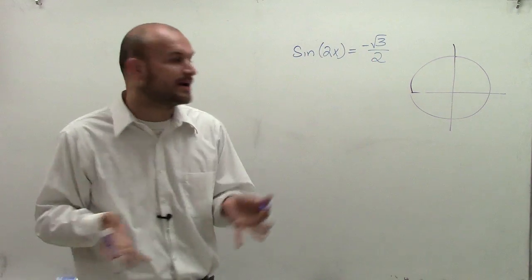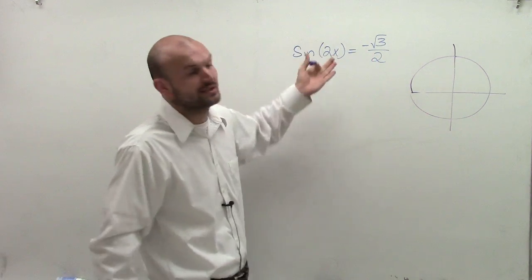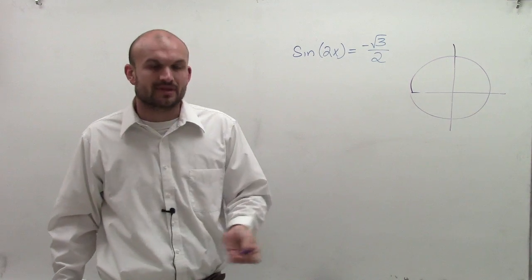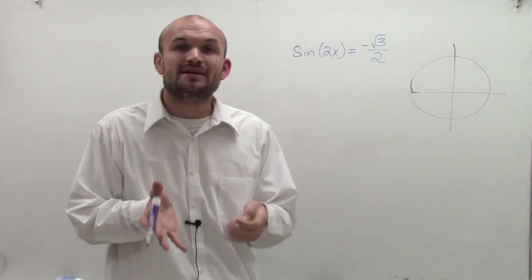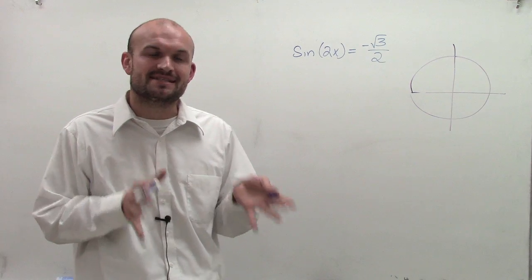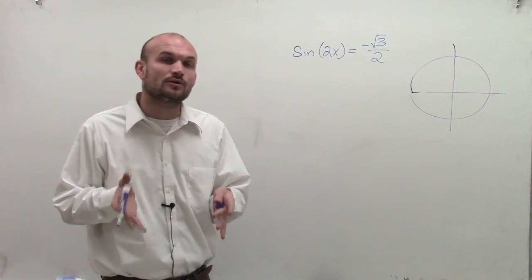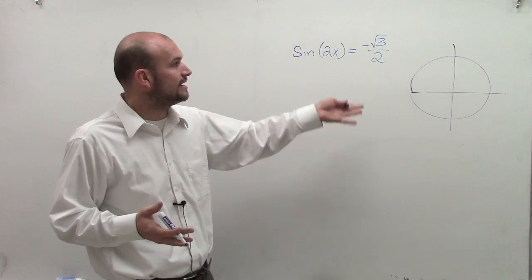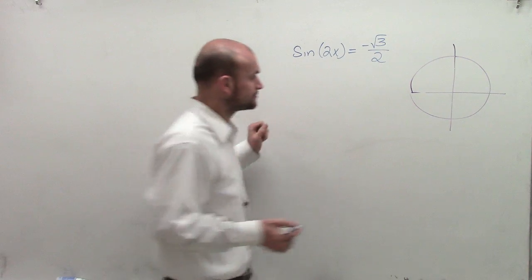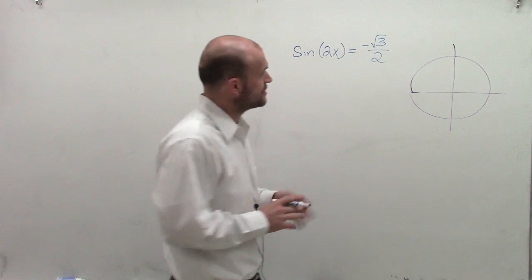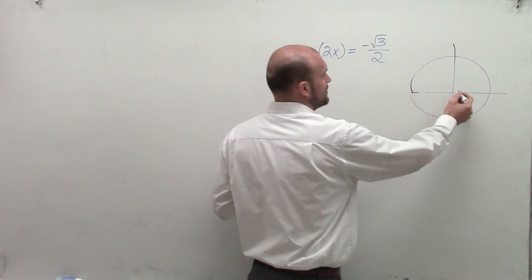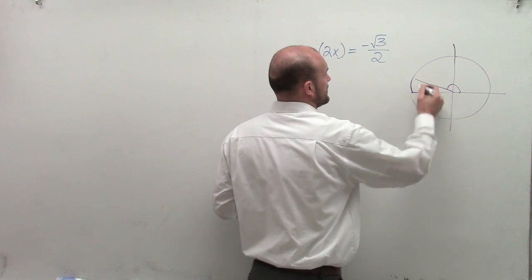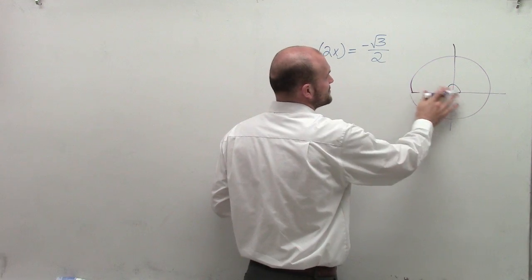Now what I want to do is determine when are my values of my sine of an angle equal to negative square root of 3 over 2. Remember that when looking at the unit circle, the sine of an angle is equal to the y-coordinate of that coordinate point of your angle on the unit circle. So I need to look over here and now determine that there's two angles that when my sine is equal to a negative square root of 3 over 2.